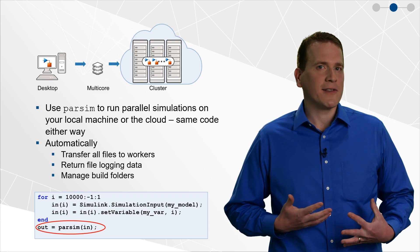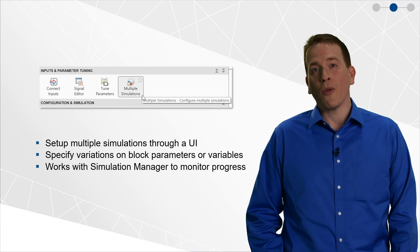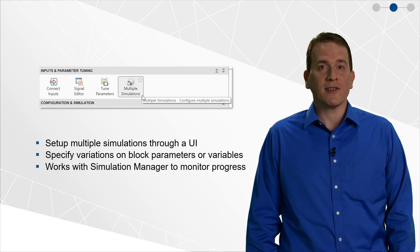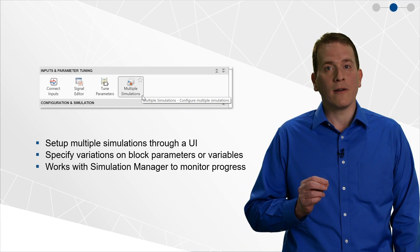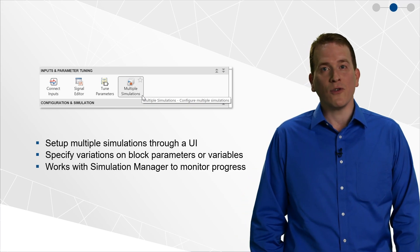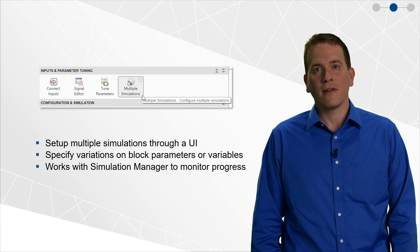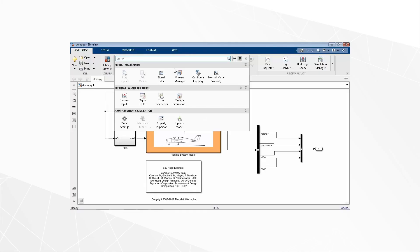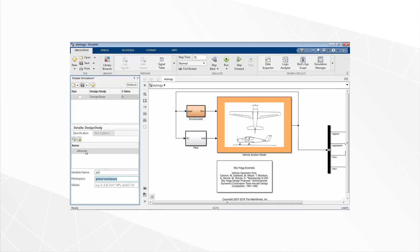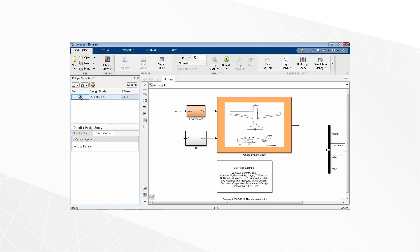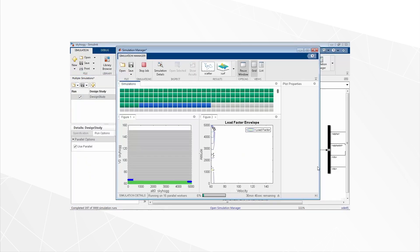But we asked: how can we make this process even easier? Introducing the multiple simulations panel — a new UI in Simulink for setting up multiple simulations, no code required. Just specify the parameters and variables in the model you want to change for each simulation, then kick off a job and monitor its progress with the simulation manager. You open the multiple simulations panel, create a new design study, and specify which parameters you want to change. If you want to run the simulations in parallel, just check the box in the run options. Once you activate the design study, the run button turns into the Run All button, and clicking that starts the job. The simulation manager shows progress and automatically plots results as each simulation completes.